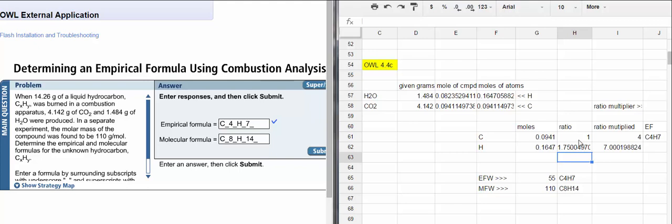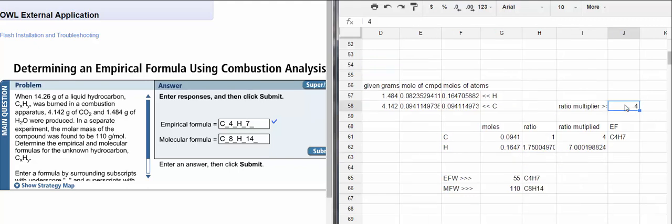We have to multiply this proposed ratio by a whole number to determine the least whole number ratio. I'm going to set up a ratio multiplier here, and I'm going to propose it to be 4.